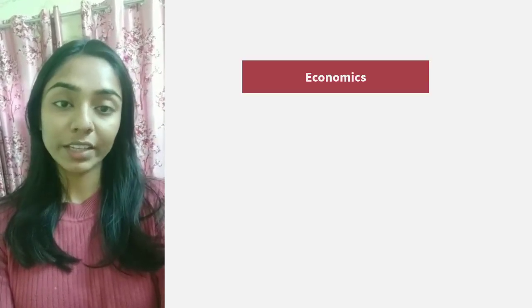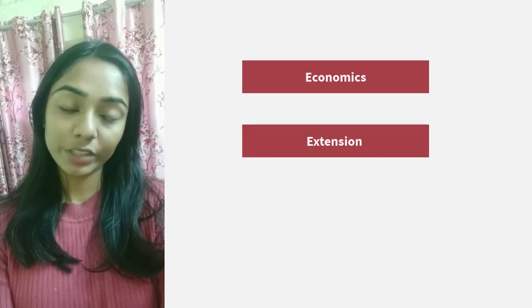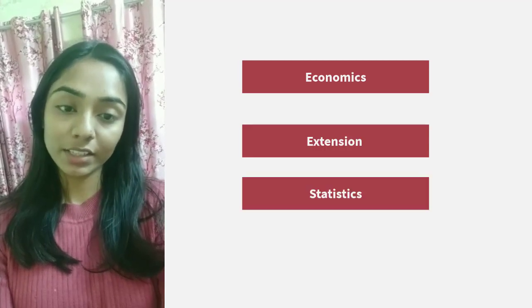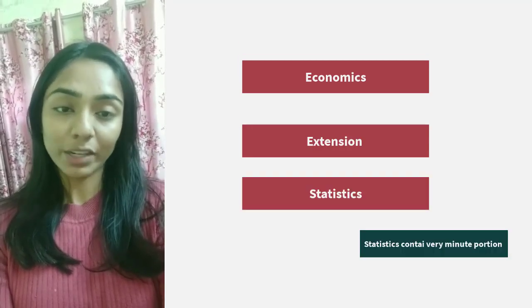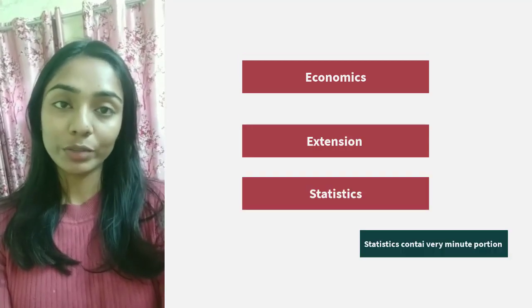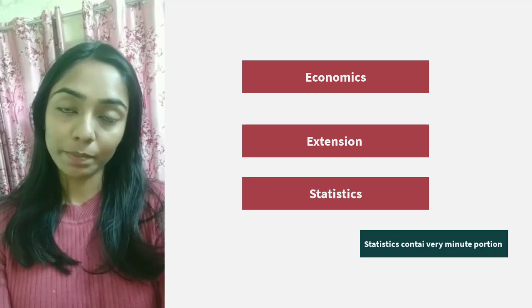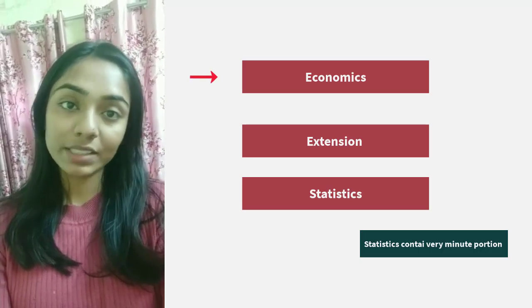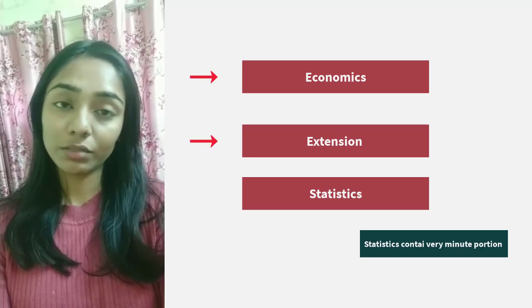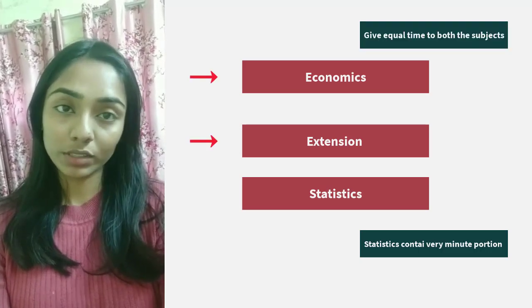If you have decided that you want to do your PG preparation from Social Sciences group, then you must know that there are three subjects that you need to study. First is economics, second is extension, and third is statistics. Statistics contains a very minor portion so it won't take much time. Start your preparation with economics and extension and give equal time to both subjects.